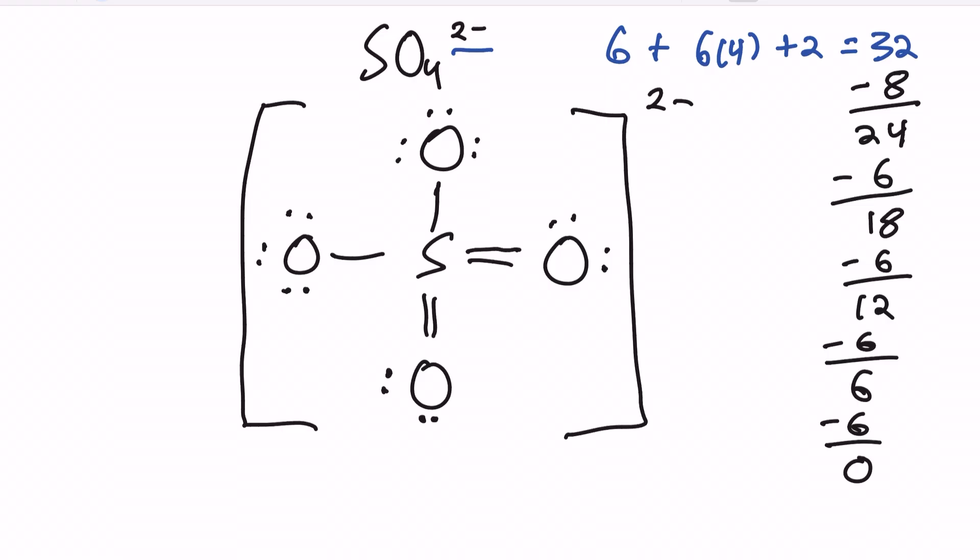This is our final Lewis structure for SO4 2−. One clarification: why does sulfur have 12 electrons when we said atoms can only have an octet? For elements in the first two rows of the periodic table, they can only form octets. However, elements in the third row and beyond are much larger and can hold more than eight valence electrons. Sulfur is in row three, so it can hold up to 12 electrons. This is called the expanded octet, and there will be a full video on this topic on the channel.